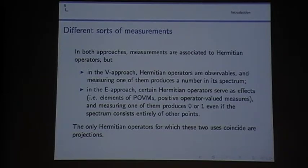Because in the value approach you deal with Hermitian operators as observables. So when you measure one you get an eigenvalue. In the expectation approach you use some Hermitian operators as effects, which means members of the POVMs. And when you measure you get zero or one, never mind what eigenvalues are there. So the only Hermitian operators for which these two uses coincide are projections.